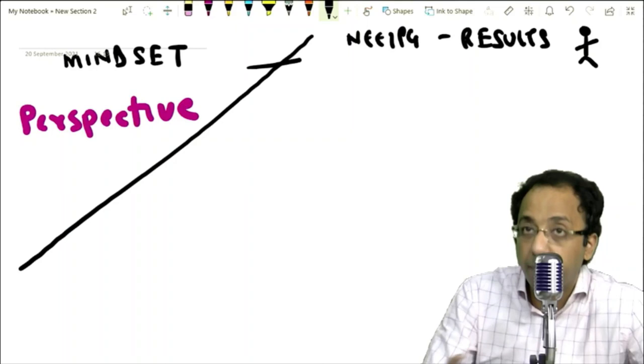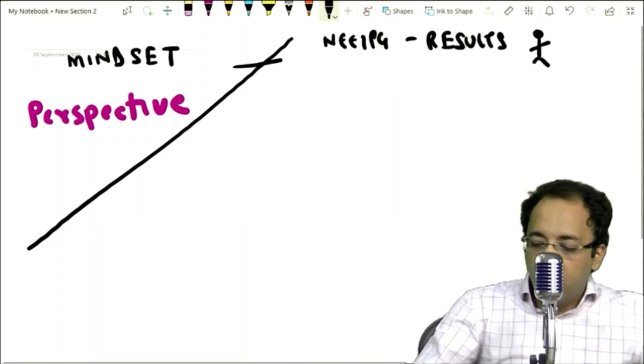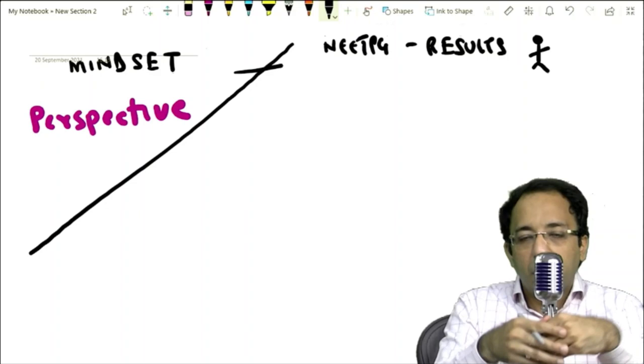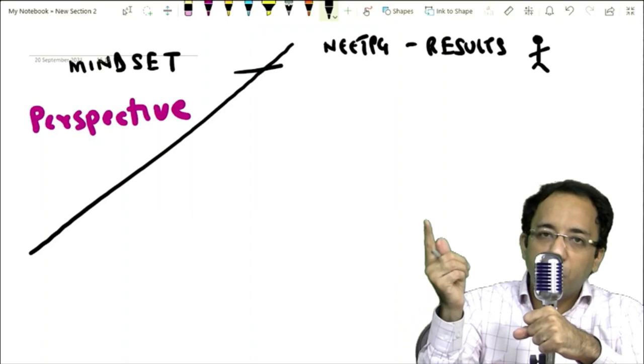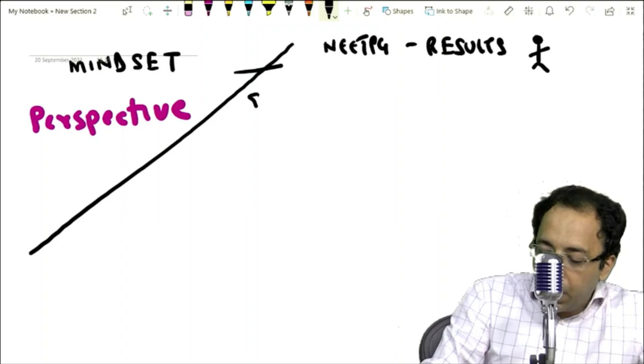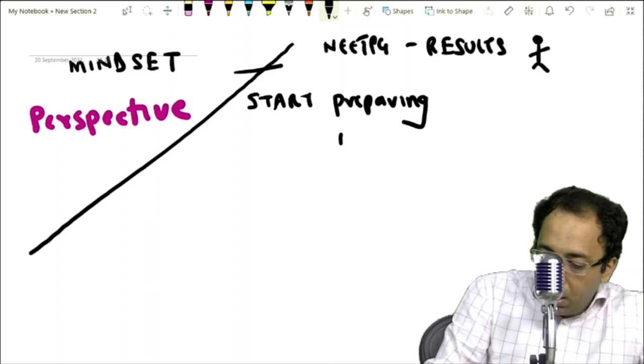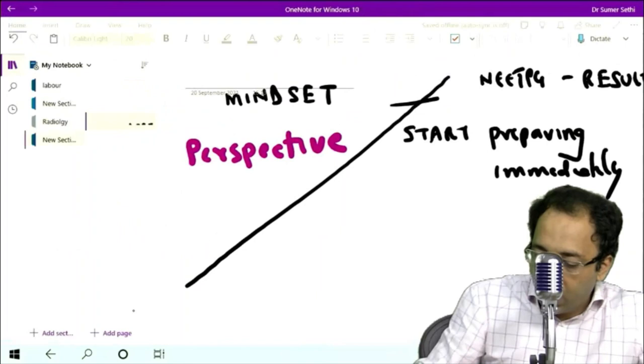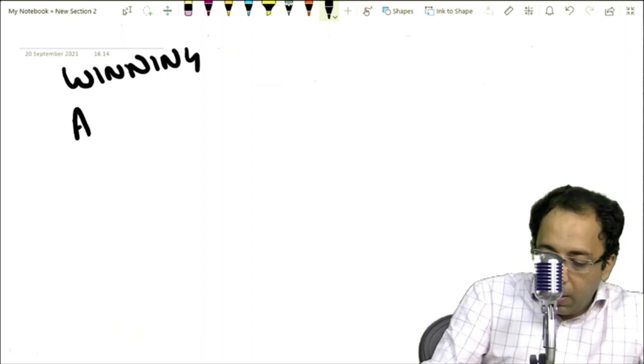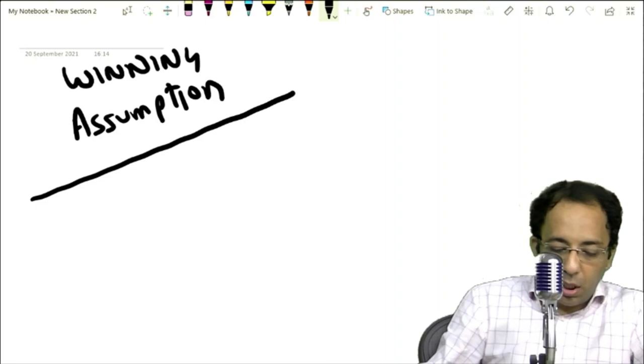Now when you look at this situation, students will look at it two ways. Some say 'sir, result hasn't come yet, so I cannot prepare for INI CET because I don't know if I stand a chance or not.' But the problem is if you think like that, then you don't stand a chance to get into INI CET. We need to start preparing immediately. We have to work with a winning assumption. I will explain what do I mean by winning assumption.